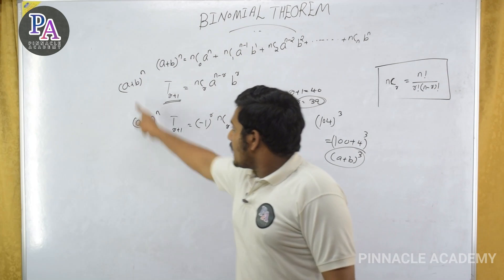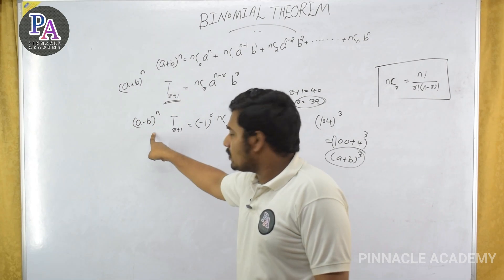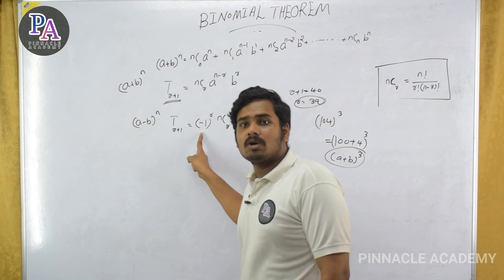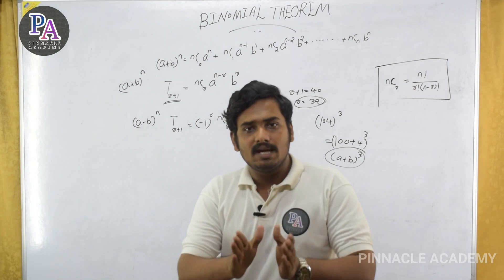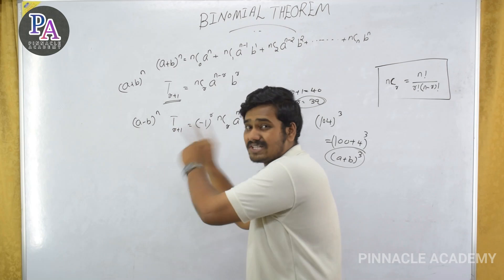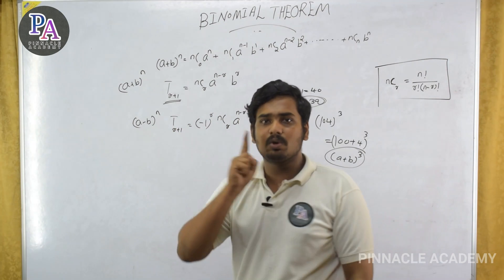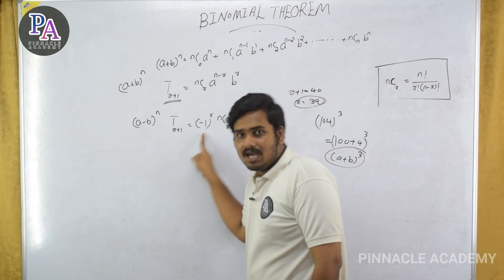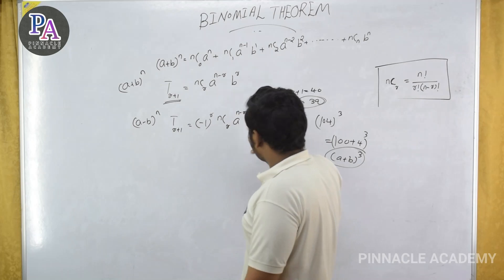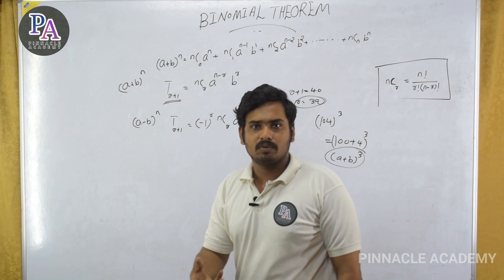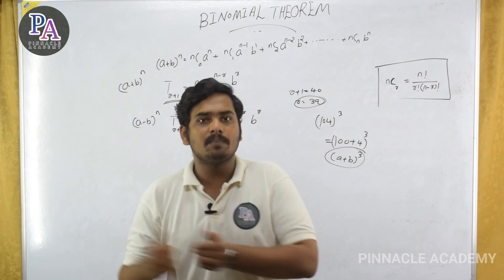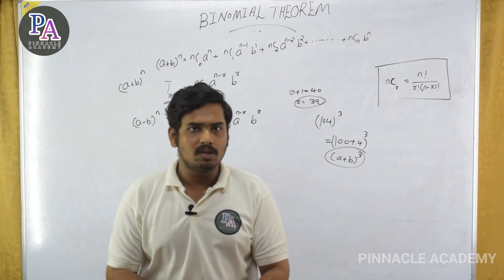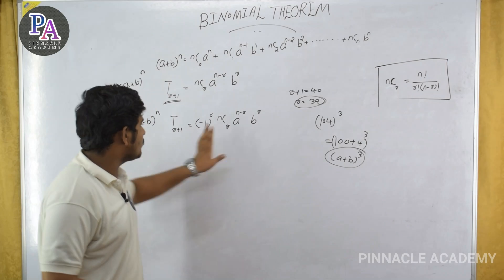This is A minus B the whole raise to n — the equation is different. A minus B whole raise to n: you multiply by minus one the whole raise to r. Negative one to the power r: if r is even, the result is positive; if r is odd, the result is negative — that is the sign rule.